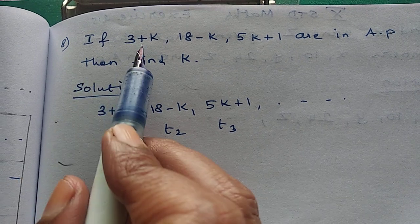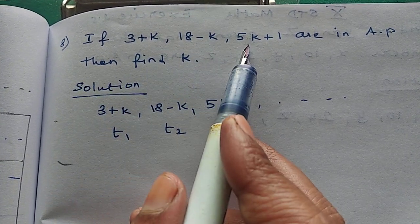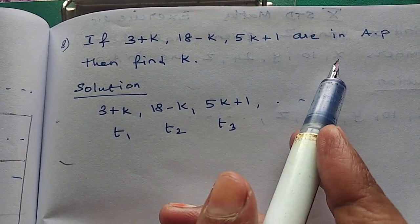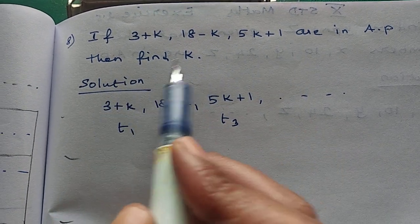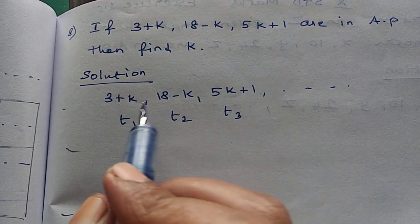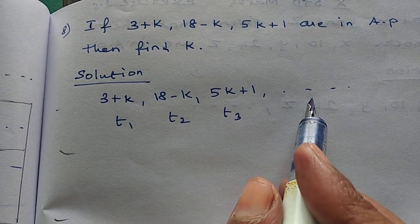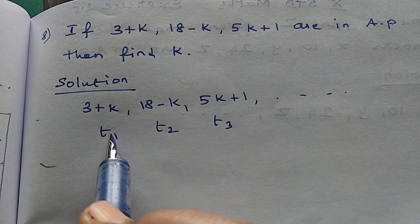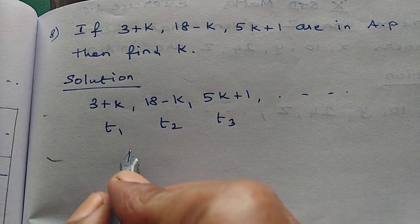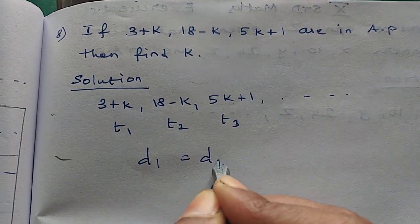8th sum: if 3 plus k, 18 minus k, 5k plus 1 are in AP, then find k. First sequence write t1, t2, t3. Find d1 equal to d2.